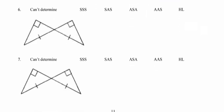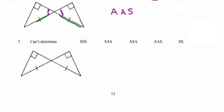In number six, hypotenuse-leg worked well in the previous example, so maybe it will work here too. But looking at this picture, while I do have a pair of congruent hypotenuses, I don't have a pair of congruent legs. What I can work with is the pair of vertical angles in the picture. My green sides touch the purple angle but not the right angle, so I've got a pair of angles and a pair of sides that touches one angle but not the other — that's the angle-angle-side scenario. Number seven is exactly the same as six, and once was enough.